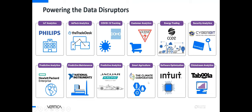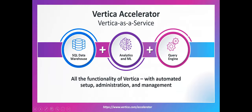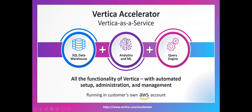For IoT use cases, Climate Corporation — a software company acquired for a billion dollars — uses Vertica as its embedded analytical engine for agri-tech to help farmers achieve better crop yields. Intuit's TurboTax also runs on Vertica. Everything mentioned about Vertica is now available as a service called Vertica Accelerator, which automates setup, administration, and management, running within the customer's own AWS account to preserve security.